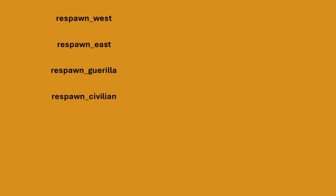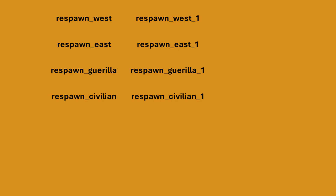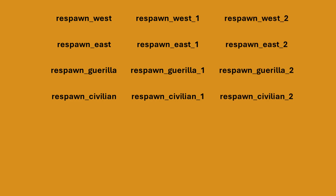The suffixes we can use are: underscore west, underscore east, underscore gorilla, and underscore civilian. If you want to add more respawn points, just add underscore and a number after the respawn or suffix.